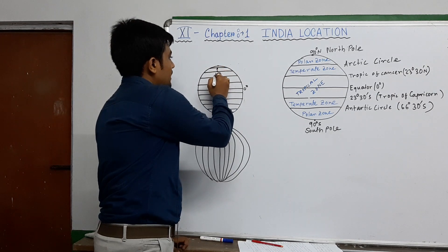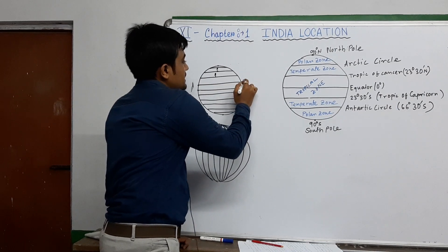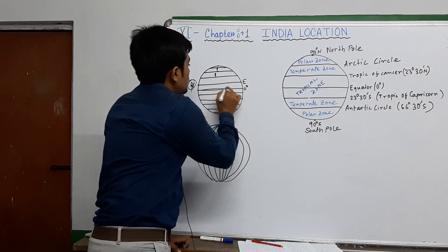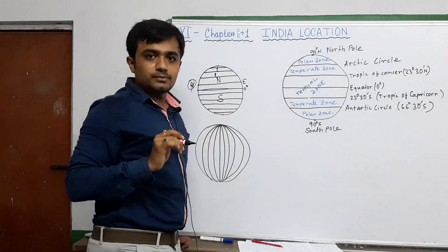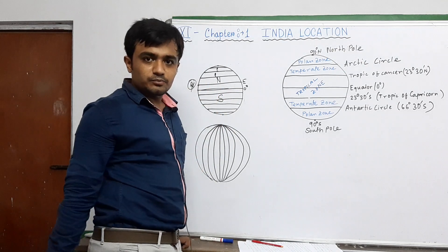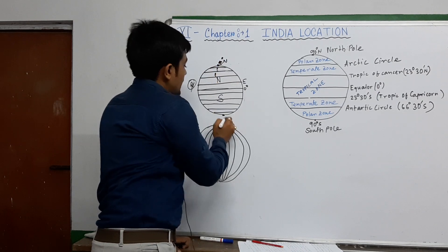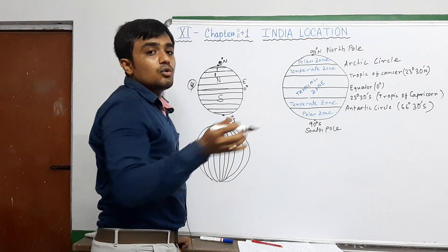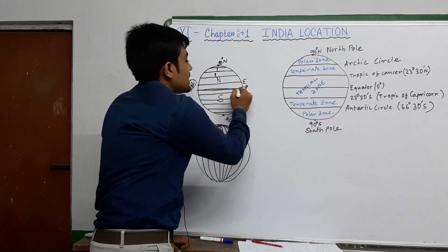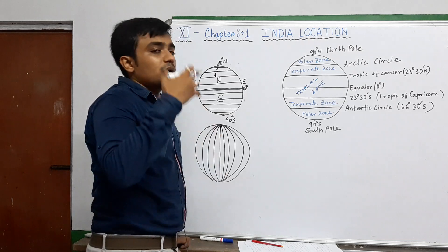Latitudes are parallel lines — you can see here both are parallel. They extend east to west but divide the earth into north and south. The extreme latitudes are 90° north and 90° south, which are known as the polar zones. The middle latitude is 0°, which is known as the equator — neither north nor south.